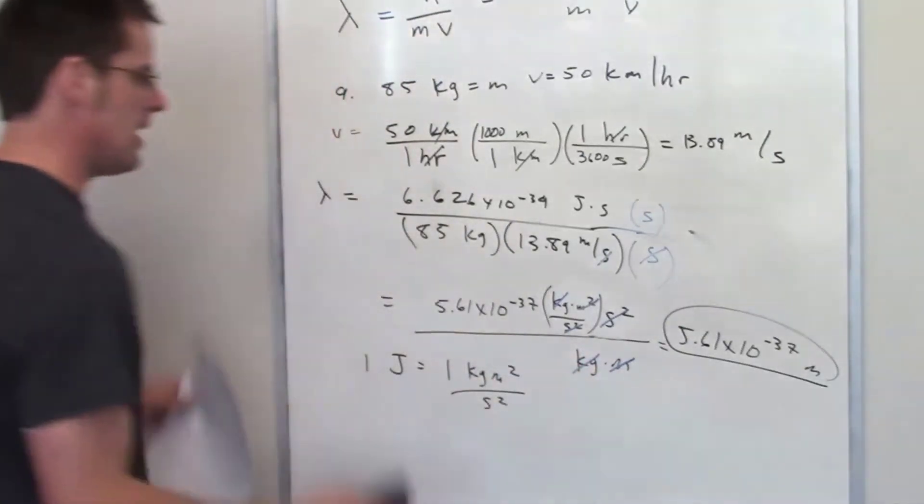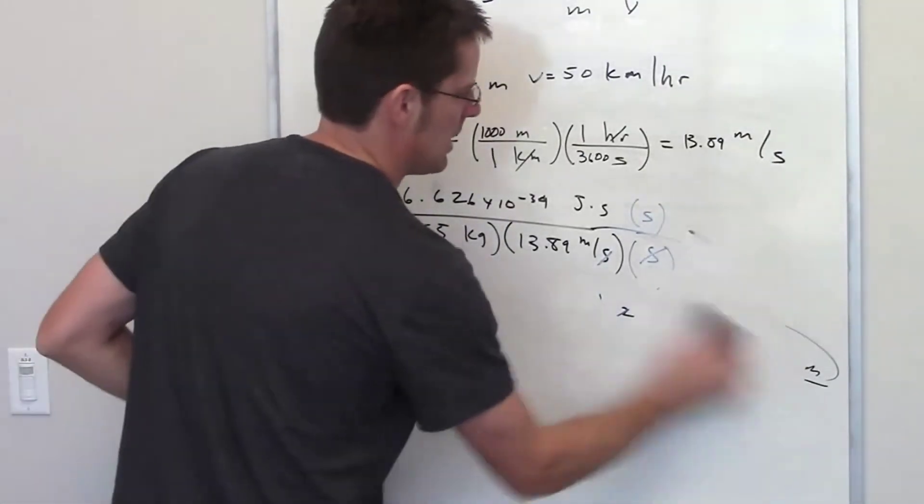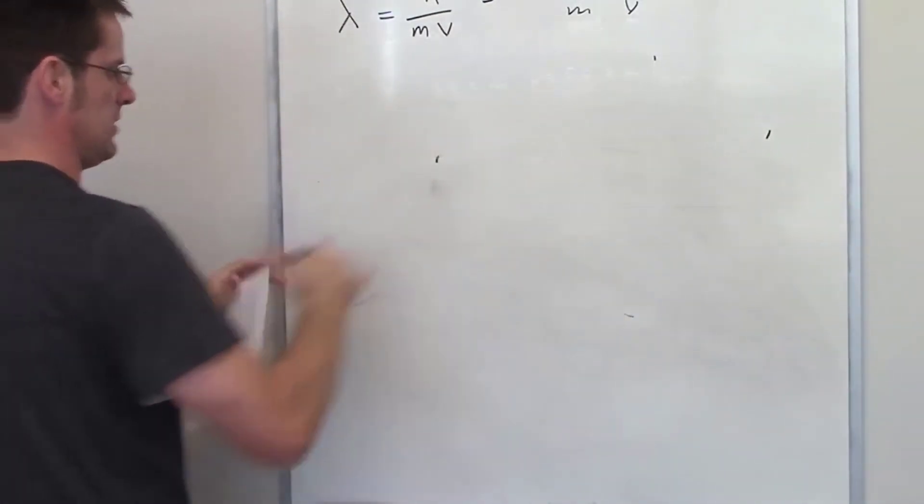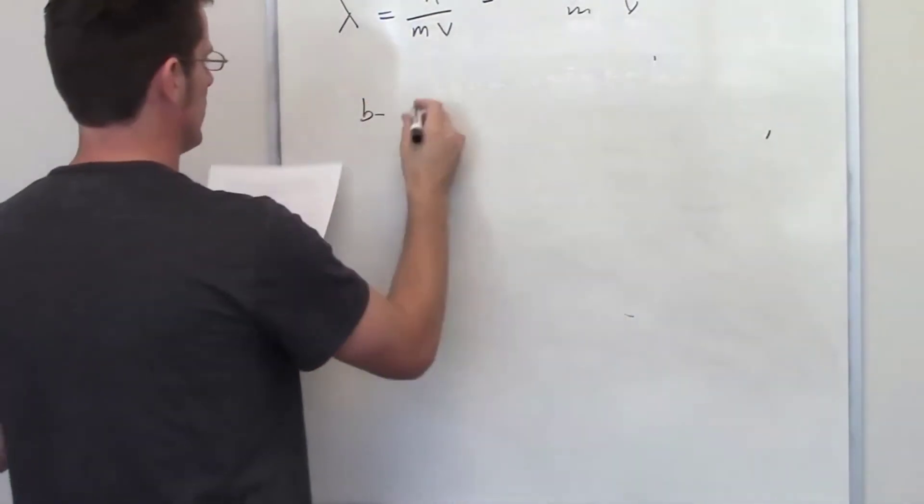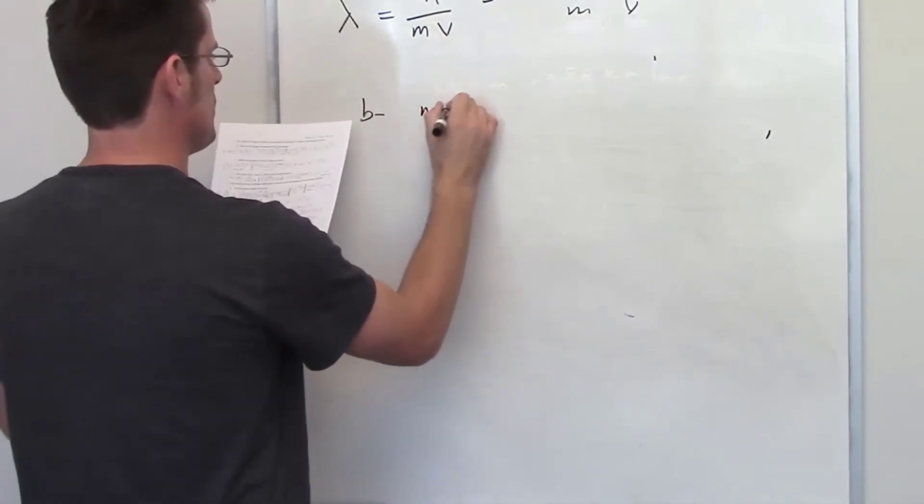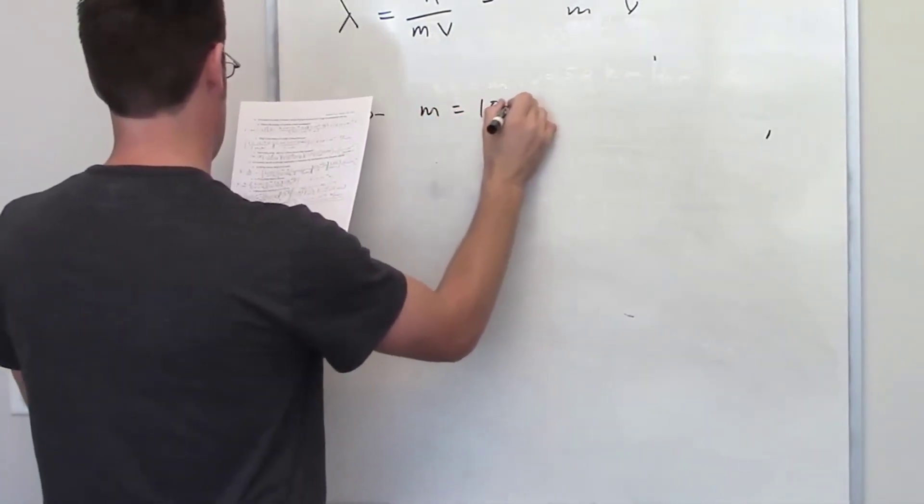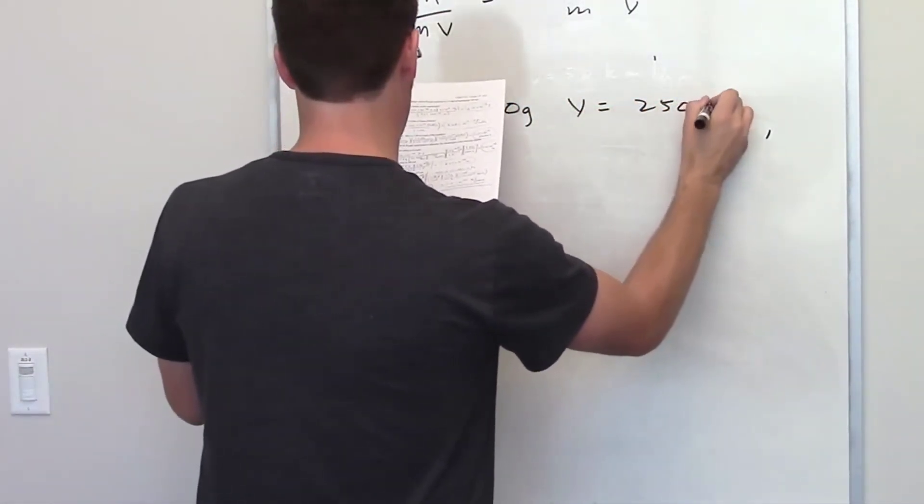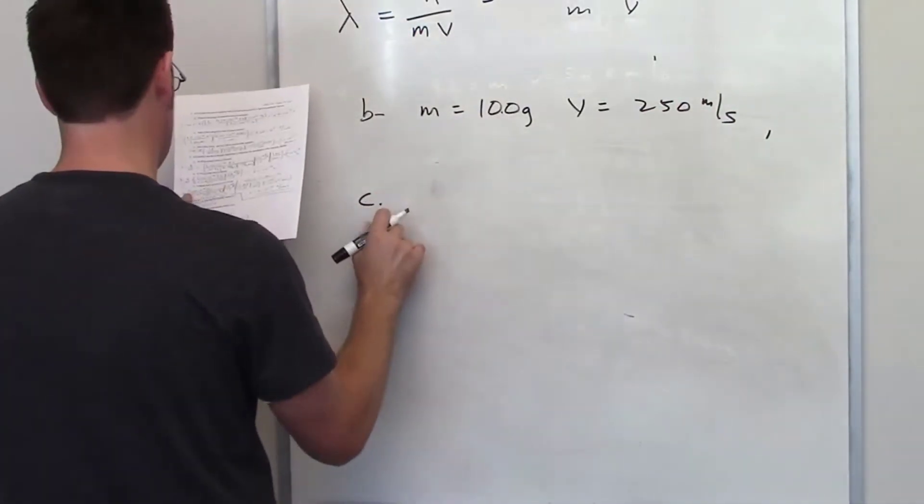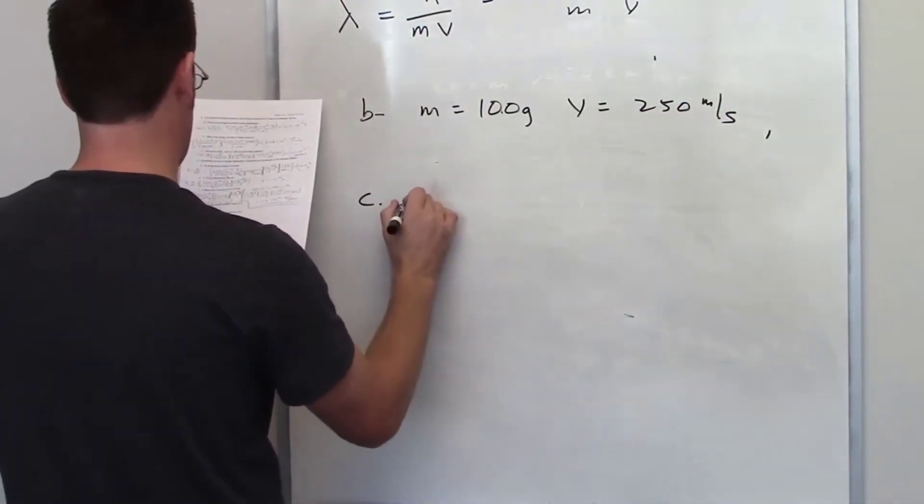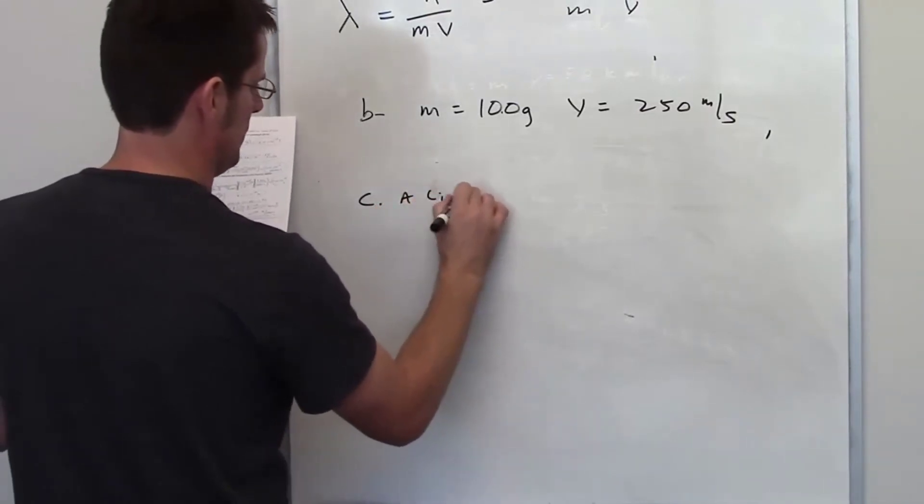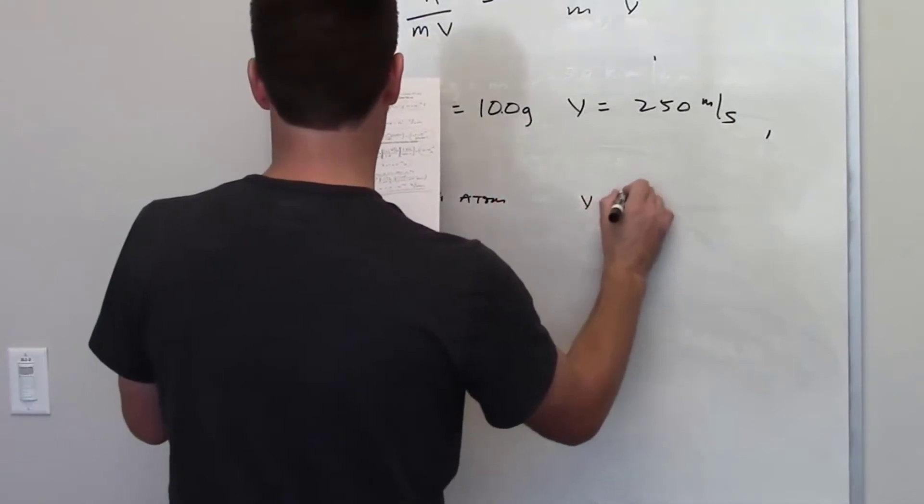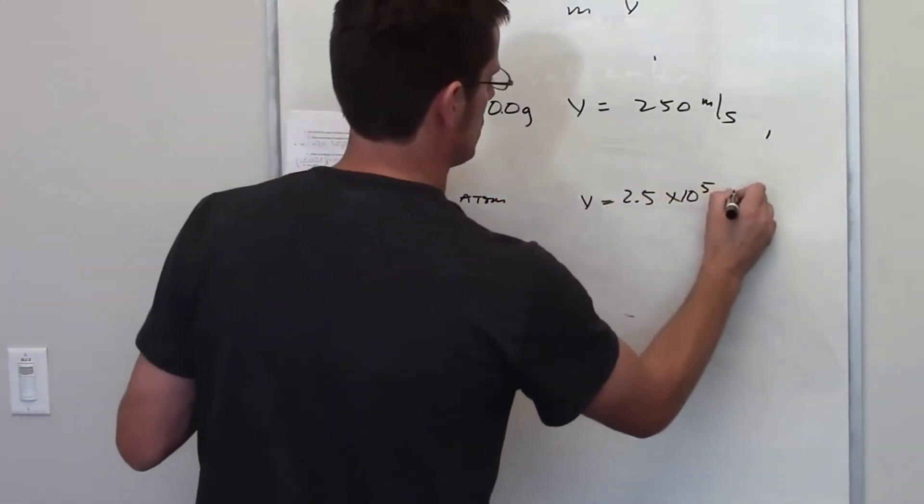Now that we've looked at that, in problems B and C that I talked about in this previous video, there are two different objects. One is a bullet whose mass is 10 grams and whose velocity is equal to 250 meters per second.